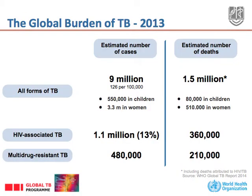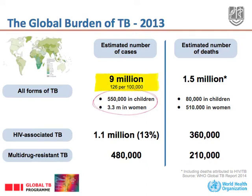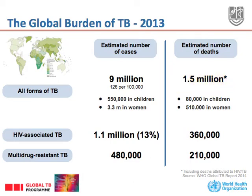The global burden of TB in 2013 is nine million new cases of TB, including 3.3 million in women, over half a million in children. 1.5 million lost their lives due to tuberculosis, which corresponds to 4,000 people every day dying of TB.